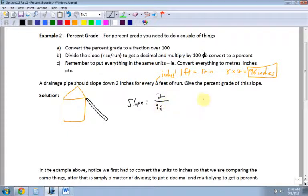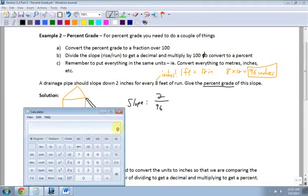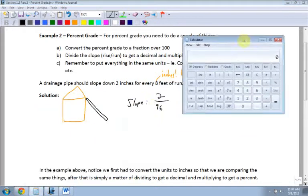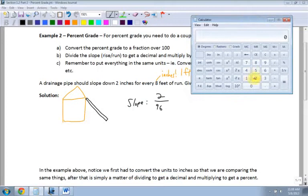Now what do I want to do here? I want to give the percent grade, right? So how do I give the percent grade? Part B says divide the slope, and then when I get the decimal, I have to multiply by 100 to get the percent. Okay, that should be pretty easy then. So I have my slope there. I divide it, 2 divided by 96.